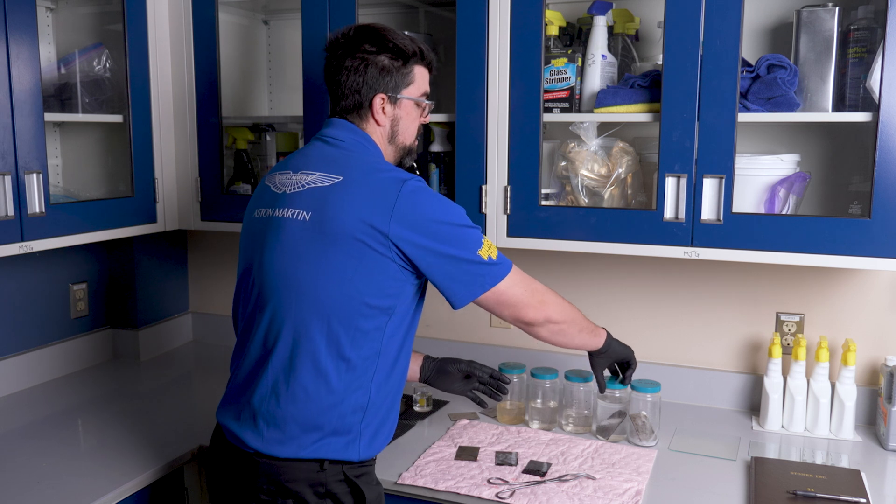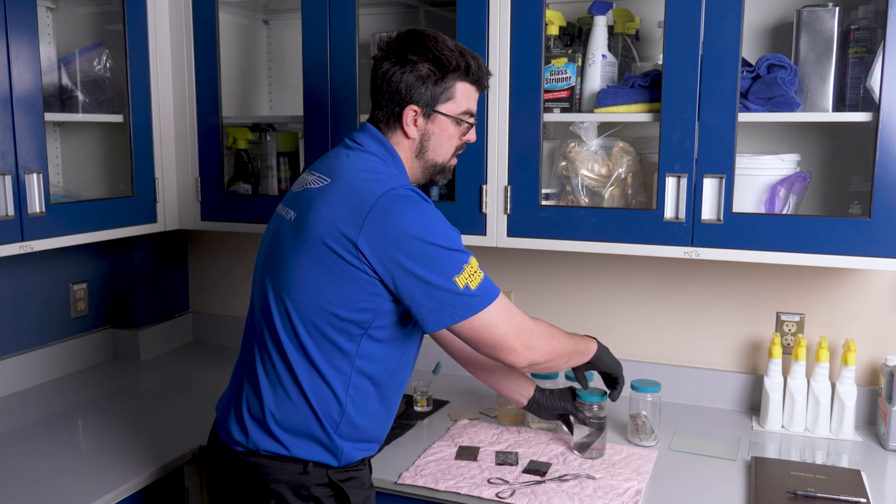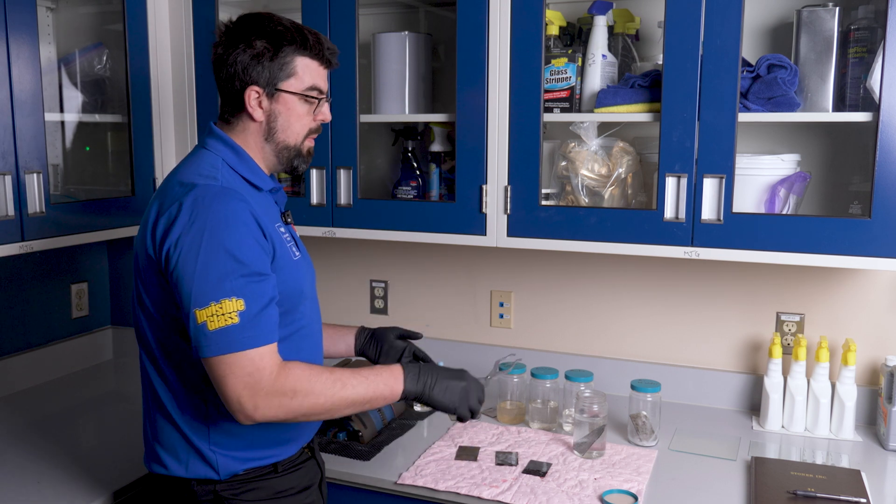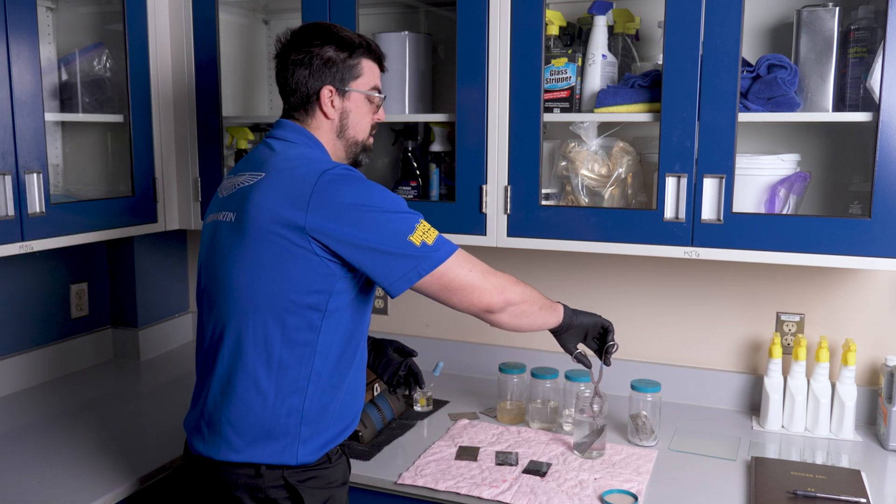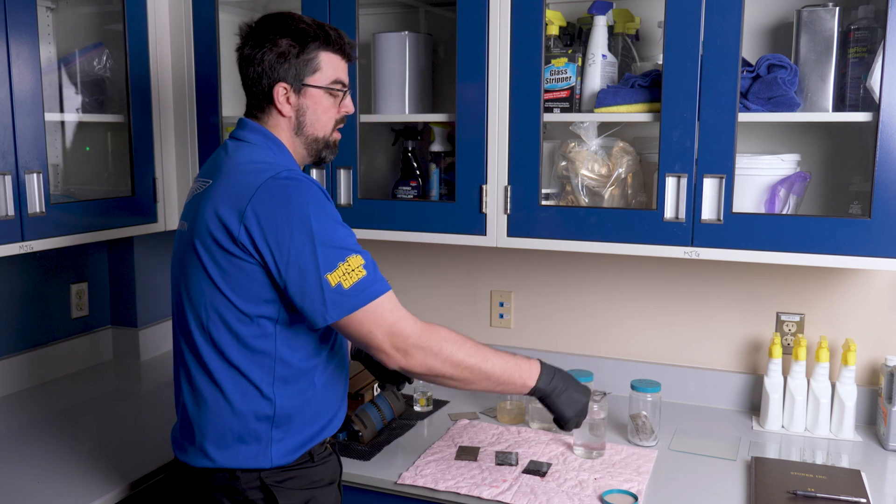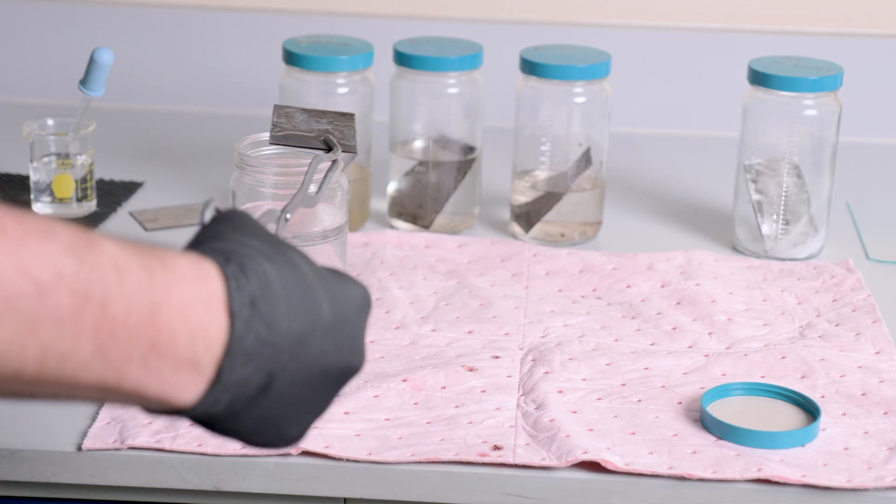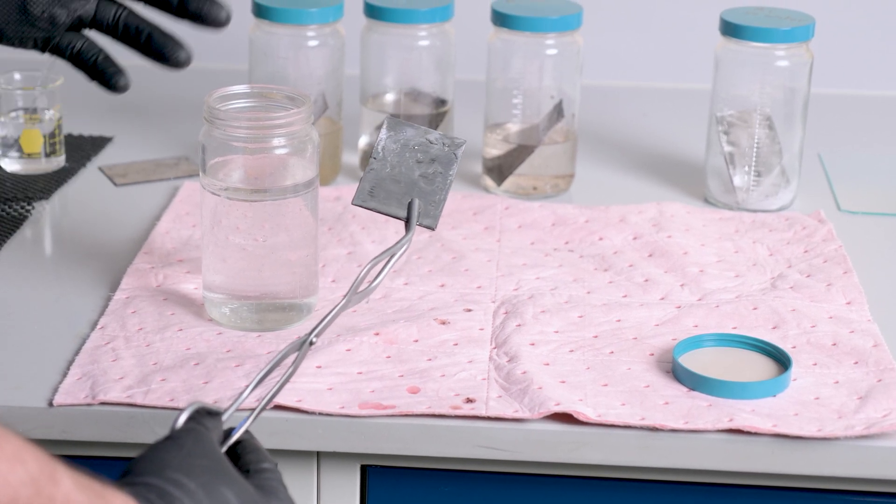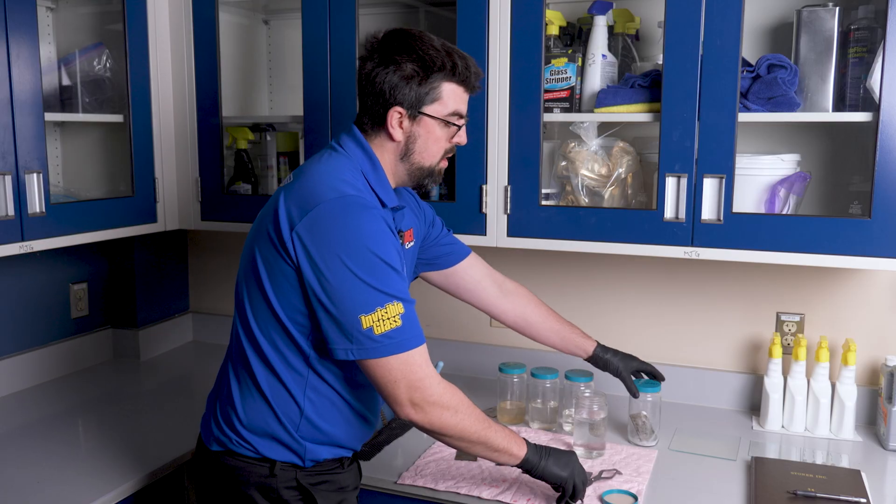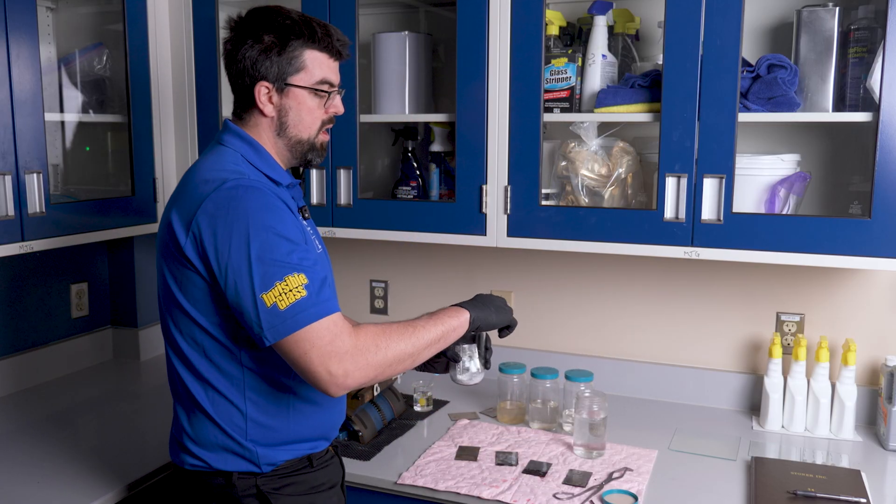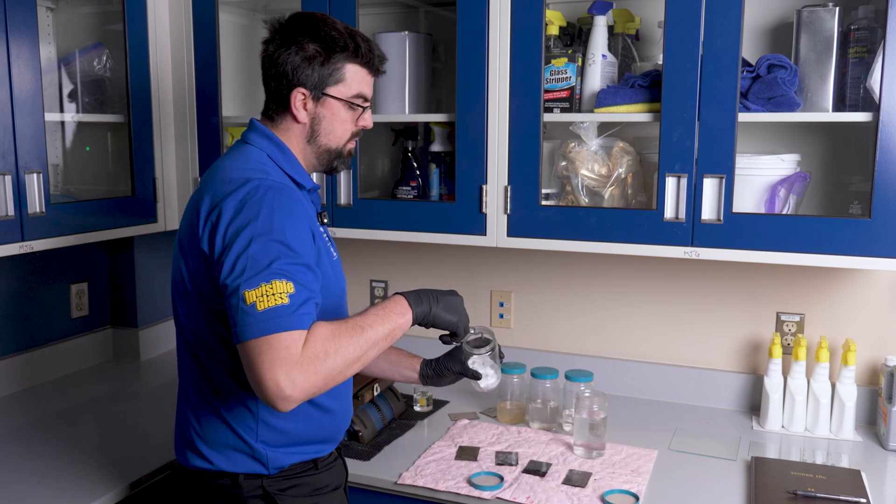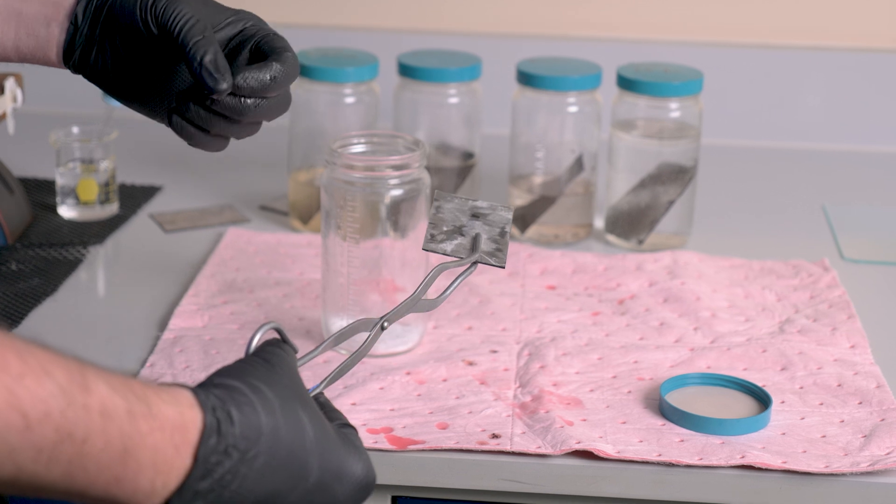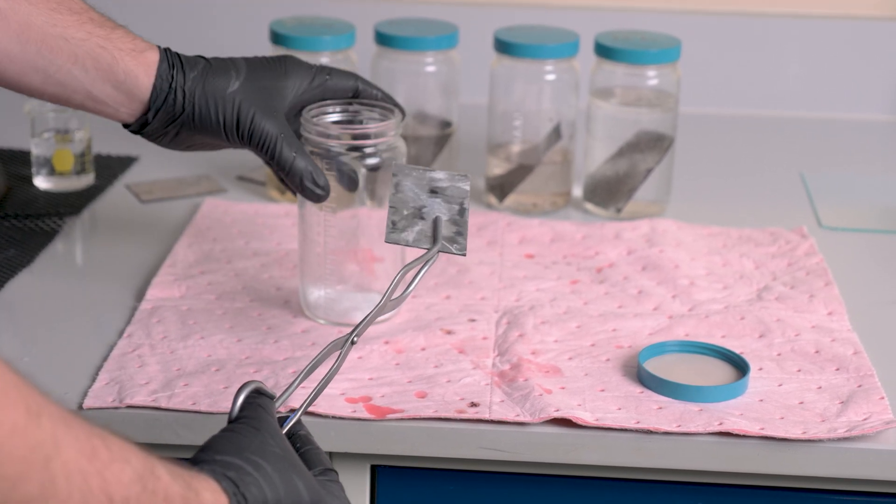And then these last two are just to show that you really need a combination of water, air, and the metal. So in this solution, we actually put a thin layer of oil on top of water. And you can see because there's no oxygen in the water, it doesn't actually corrode at all. And the same here with if you have just air and no water, you again get no corrosion because there's no electrolyte for the reaction to happen in.